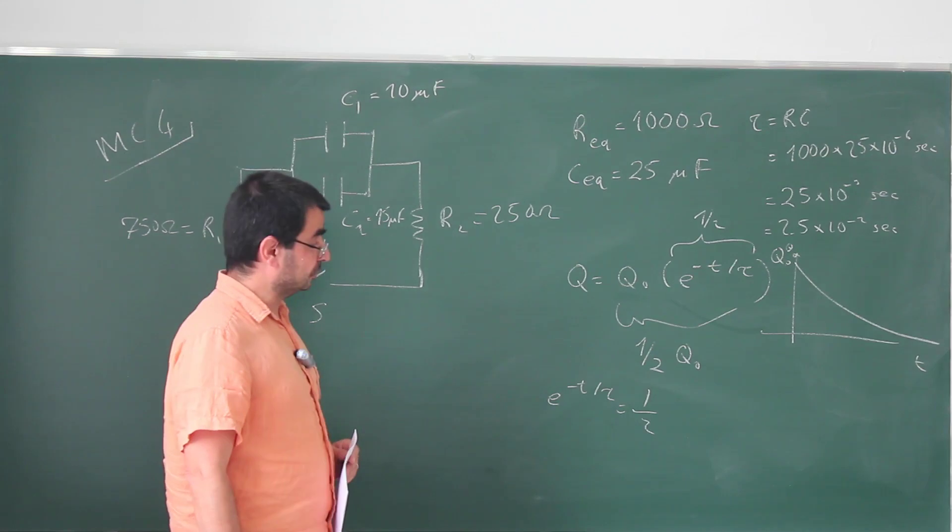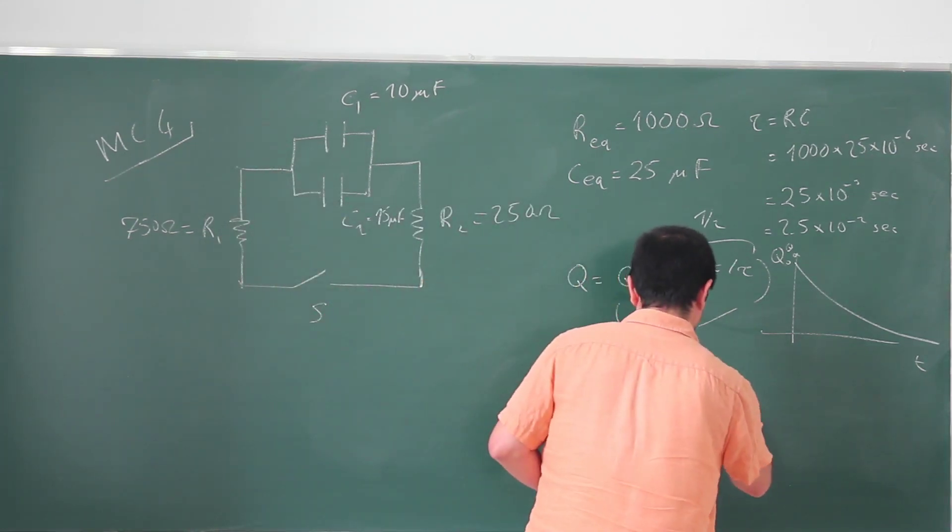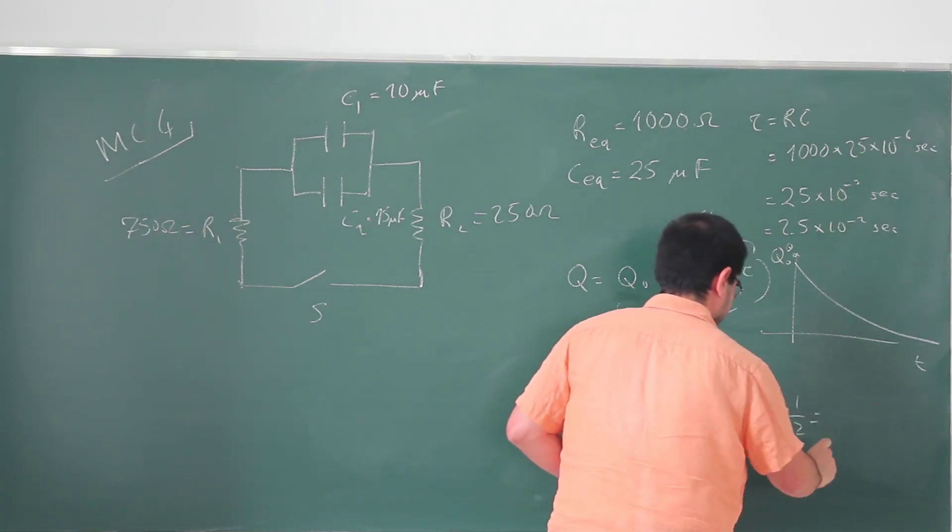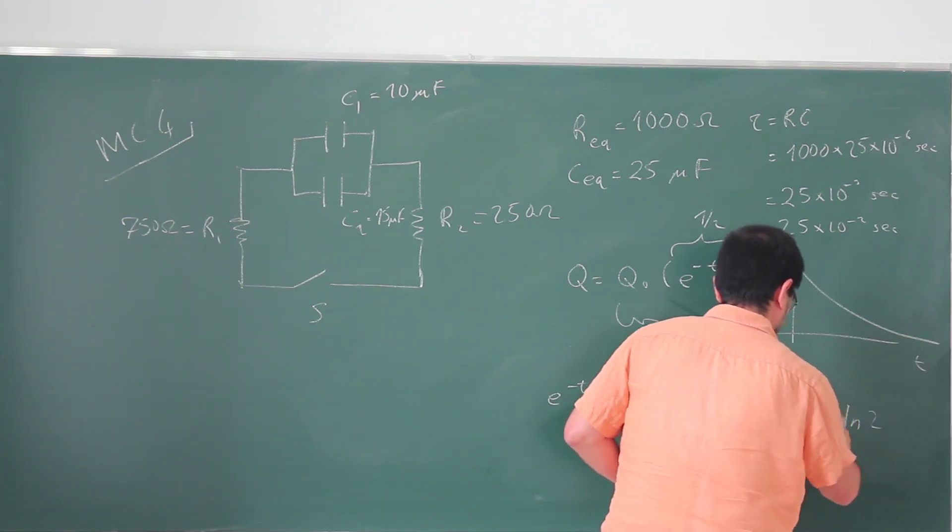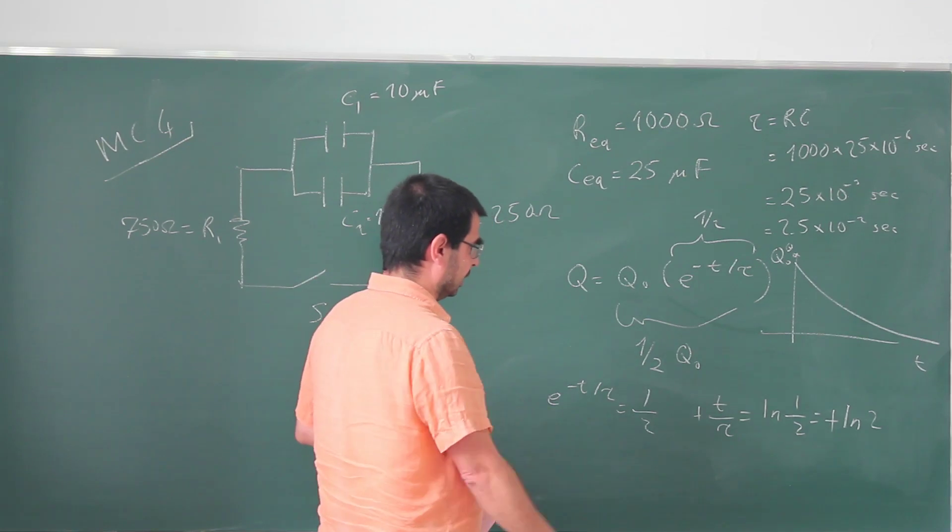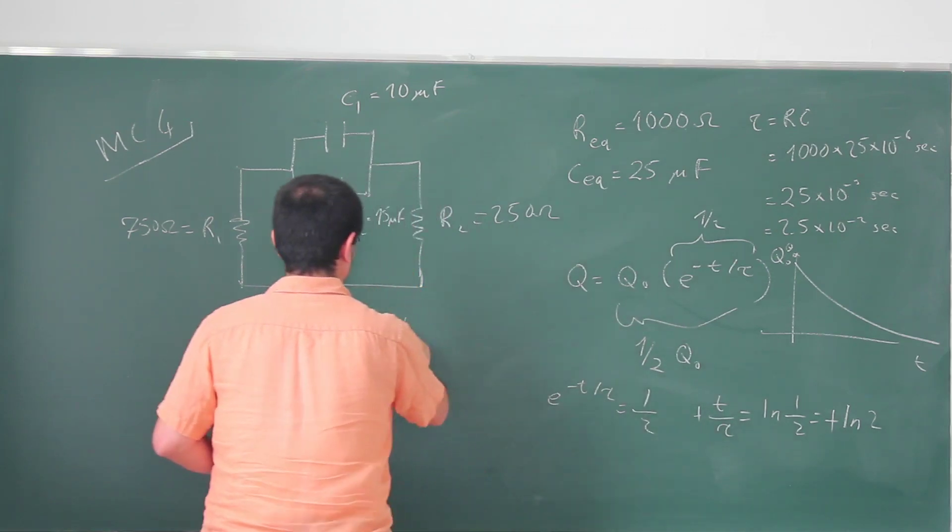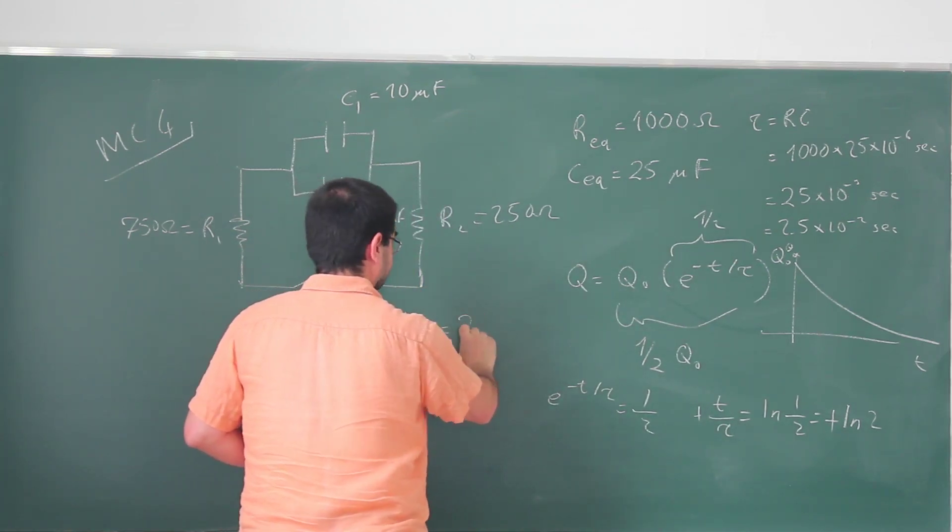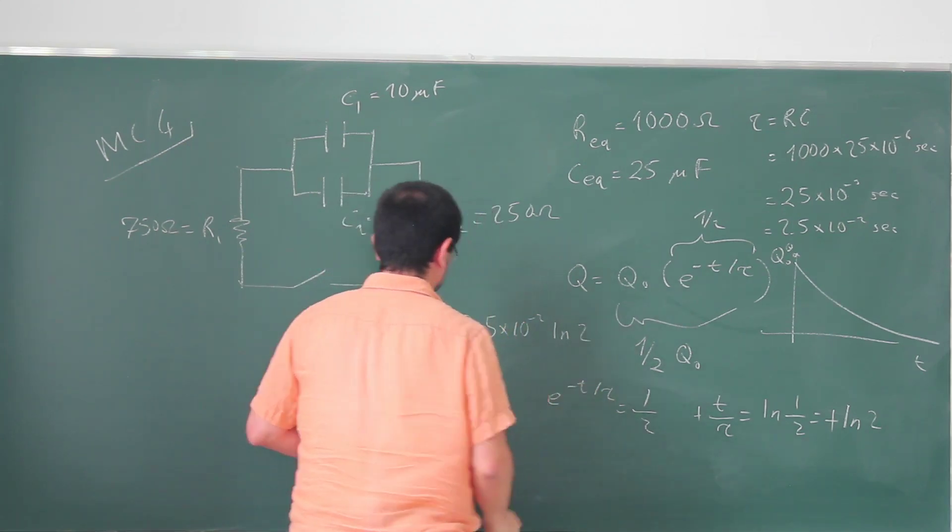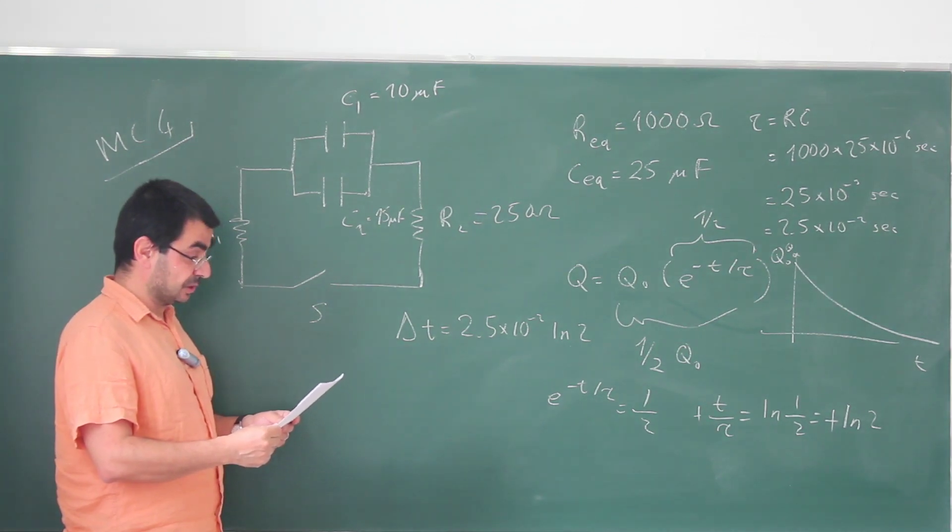I can take the logarithm of both sides to simplify this, and what I get is that minus t over tau is ln one over two, but this is minus ln 2, so this becomes plus. The time it takes is tau times ln 2, but tau is just 2.5 times 10 to minus 2 seconds, so delta t required is 2.5 times 10 to minus 2 times ln 2 seconds. And this is in fact choice C in the answer sheet.